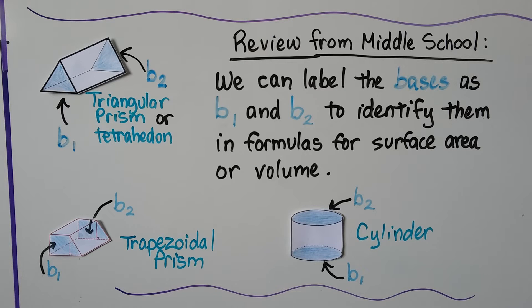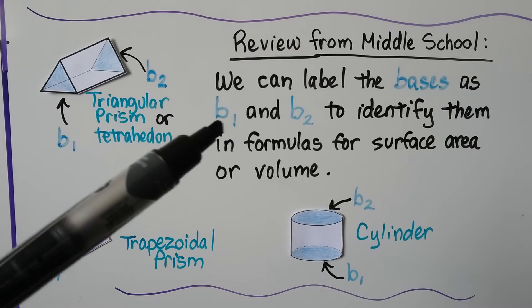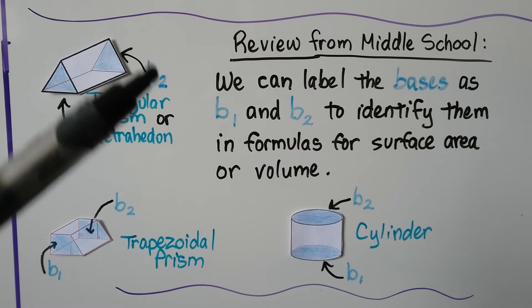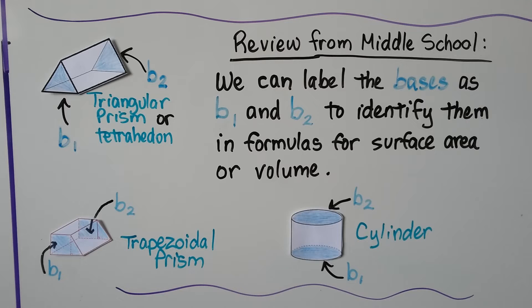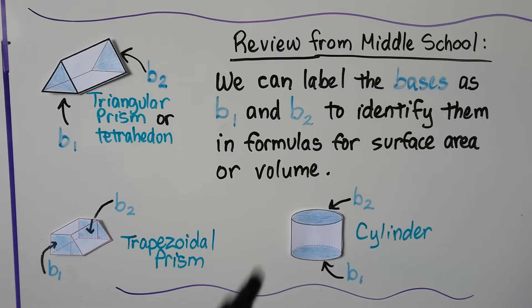Now I know a lot of you learned all this in middle school, but here's more review from middle school, because I want us to be all on the same page. This entire chapter 11 is about surface area and volume, and we can label the bases as base sub 1. That's a subscript, so it's a little 1. We read it as base sub 1 and base sub 2 for the first base and the second base. And we use them to identify the bases in a formula for surface area or volume. Here we have a trapezoidal prism. You can see this trapezoid base and this trapezoid base. And they're connected by quadrilaterals. And this cylinder has base sub 1 and base sub 2 and a curved surface.